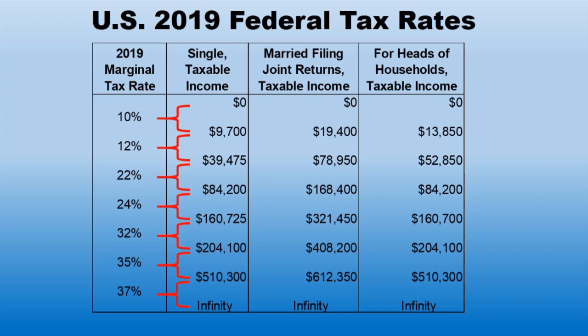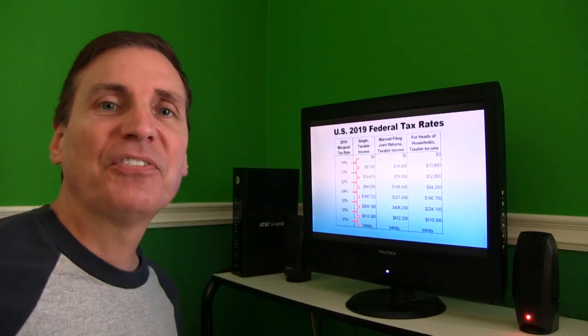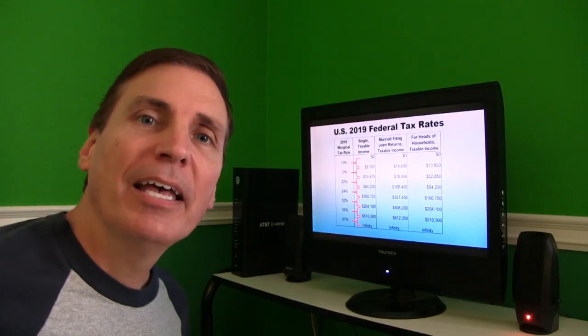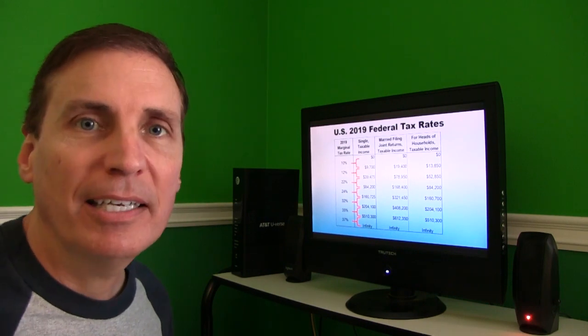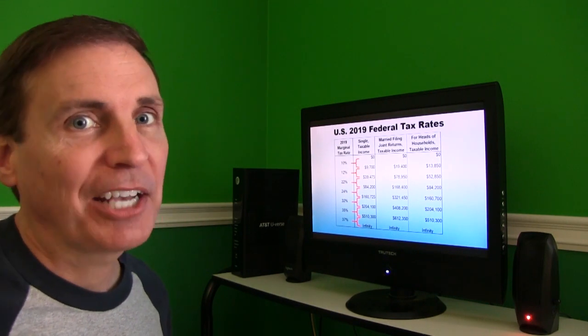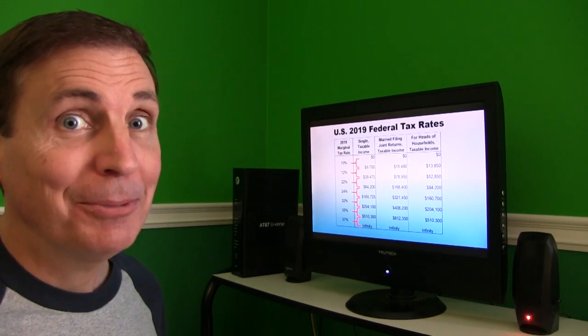Those same tax rates extend over to the married filing joint returns column and the heads of households column. You can see that those rates are a little bit different because of the way the government set it up. I hope this video was helpful and helped you realize what tax bracket you are currently in and what tax bracket you want to be in.